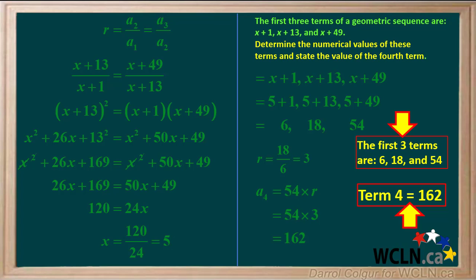So now we've answered both questions: the numerical values of the first three terms are 6, 18, and 54, and the value of the fourth term is 162.